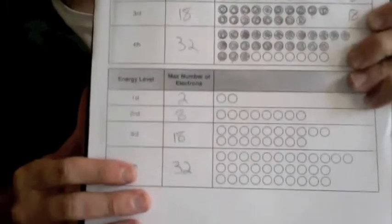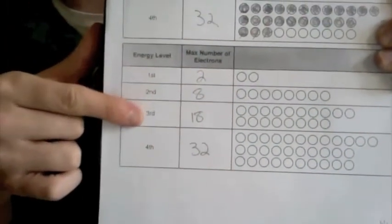So they're going to fill in first at the first row, then the second, then the third, then the fourth.